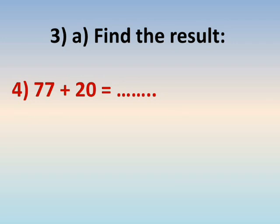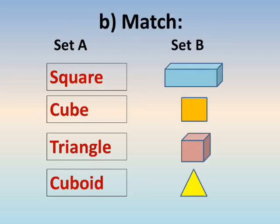Number four: 77 plus 20. Seven plus zero equals seven (any number plus zero equals the same number). Seven plus two equals nine — count: after seven, eight, nine. The answer is ninety-seven.